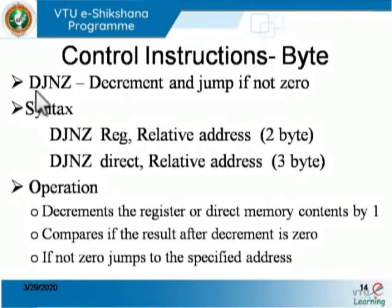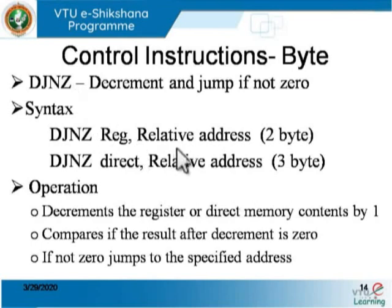The next instruction is DJNZ (Decrement and Jump if Not Zero). This is a complex instruction — that is why 8051 is categorized as a complex instruction set computer (CISC). DJNZ performs two operations: it decrements the contents of the specified register, checks whether the contents are zero, and if not zero, transfers control to the specified relative address.